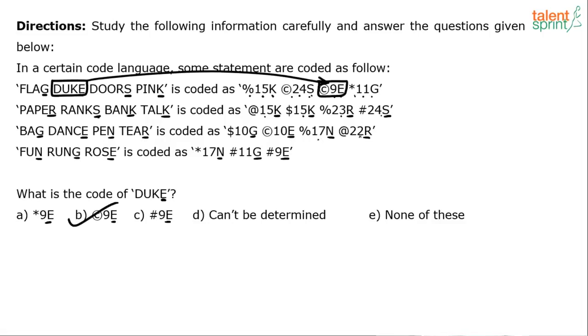Which means we will now have to identify the logic behind the number. Like for example, Duke has been coded as copyright 9E. How did we get 9? The number of letters are 4 and the position of E is 5. So this 9 represents the number of letters, 4, plus 5, which is E's position. That gives us 9.